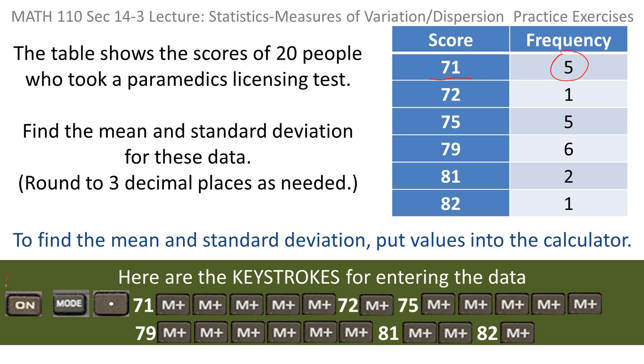When you start off, you clear the old data by pressing on, then you go into stats mode with mode decimal point.